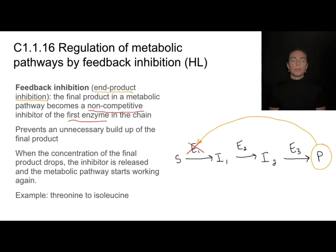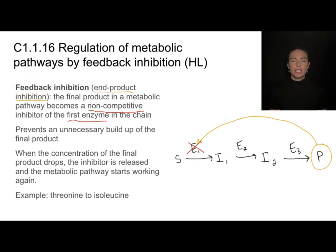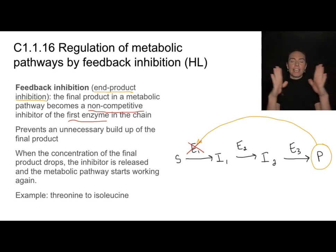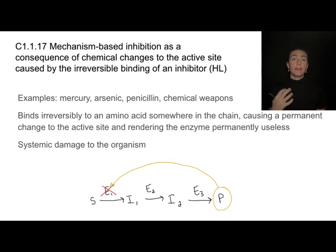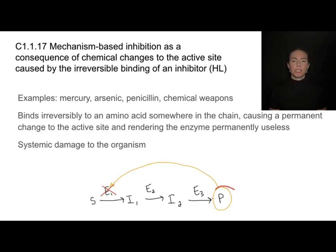This is referred to as feedback inhibition because it reflects a negative feedback loop — a way of keeping things within a certain range of values to prevent excess buildup of product. In the threonine and isoleucine example, this is reversible: once the product concentration drops enough, the inhibitor pops off, is no longer an inhibitor, and everything starts working again.